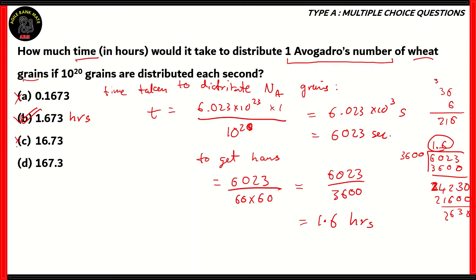Options A, C, and D are incorrect because they have the wrong decimal point, which means that the number of hours would be more or less. In the case of A, it's less. In the case of C and D, it's astronomically more. Therefore, option B, 1.673 hours, is the correct time period that it would take to distribute one Avogadro's number of wheat grains if 10 raised to 20 grains are distributed every second.